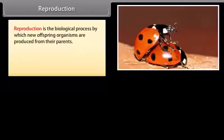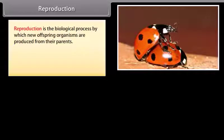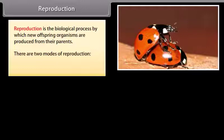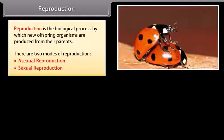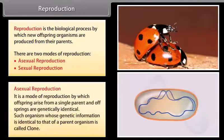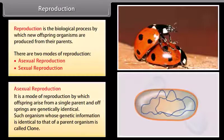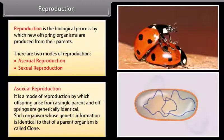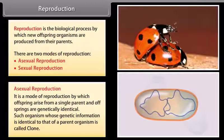Reproduction is the biological process by which new offspring organisms are produced from their parents. There are two modes of reproduction: asexual reproduction and sexual reproduction. Asexual reproduction is the mode of reproduction by which offspring arises from a single parent, and offspring are genetically identical.